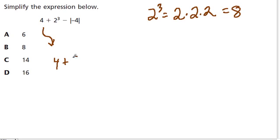And then we have the absolute value, or subtract the absolute value of negative 4. That means how far is this number negative 4 from 0? Well, the answer is it's 4 away.